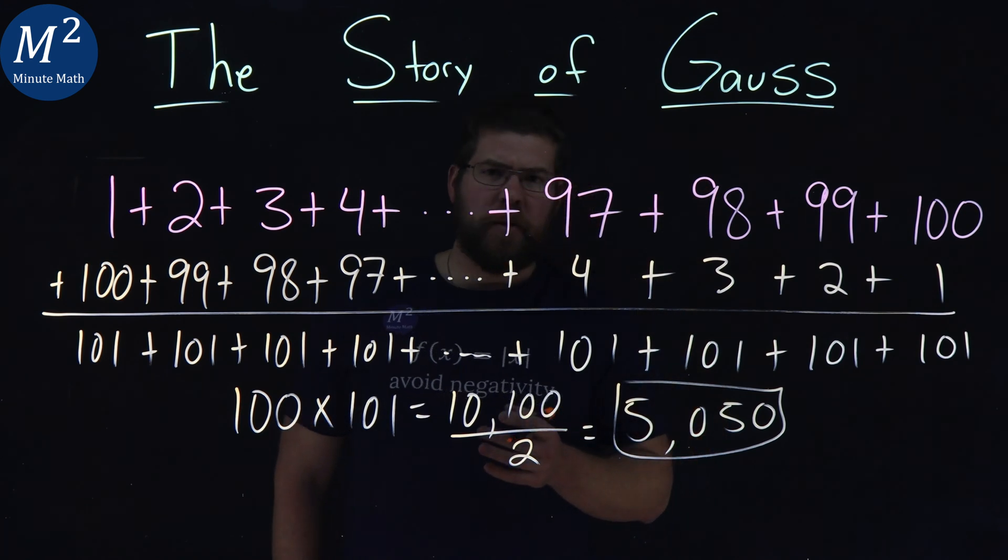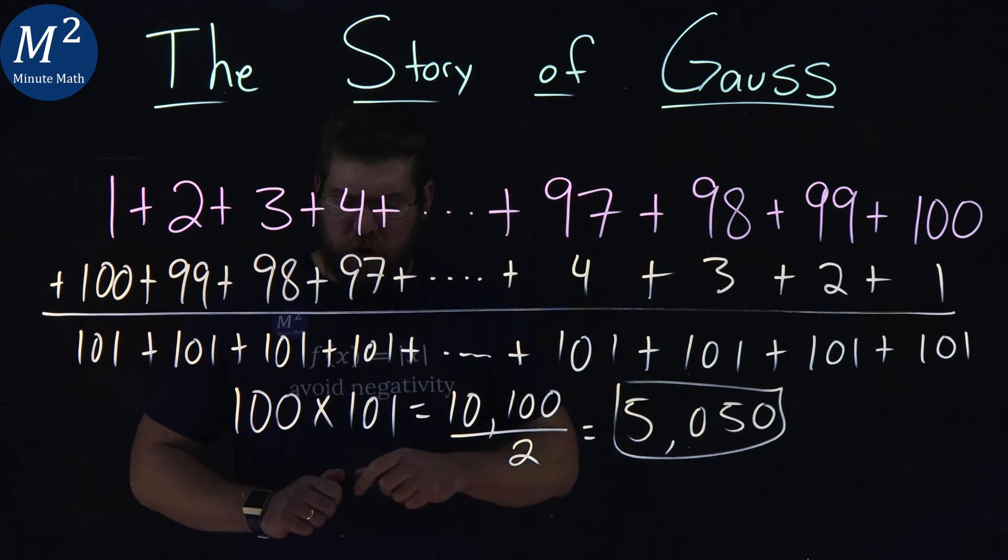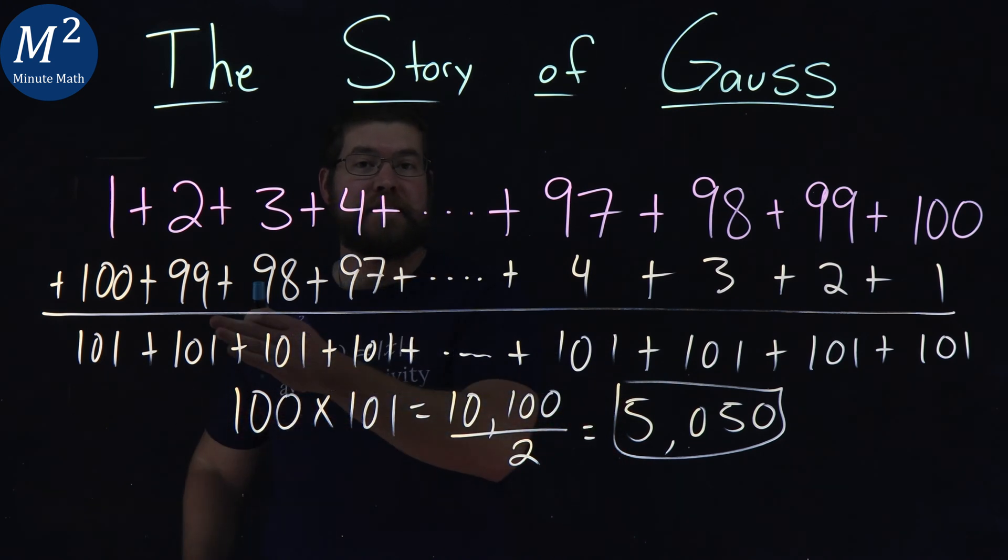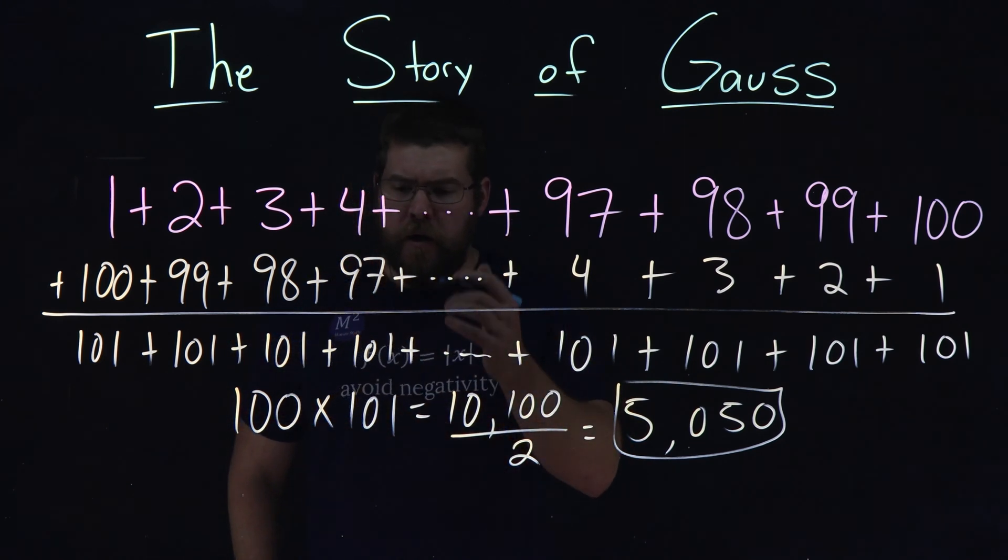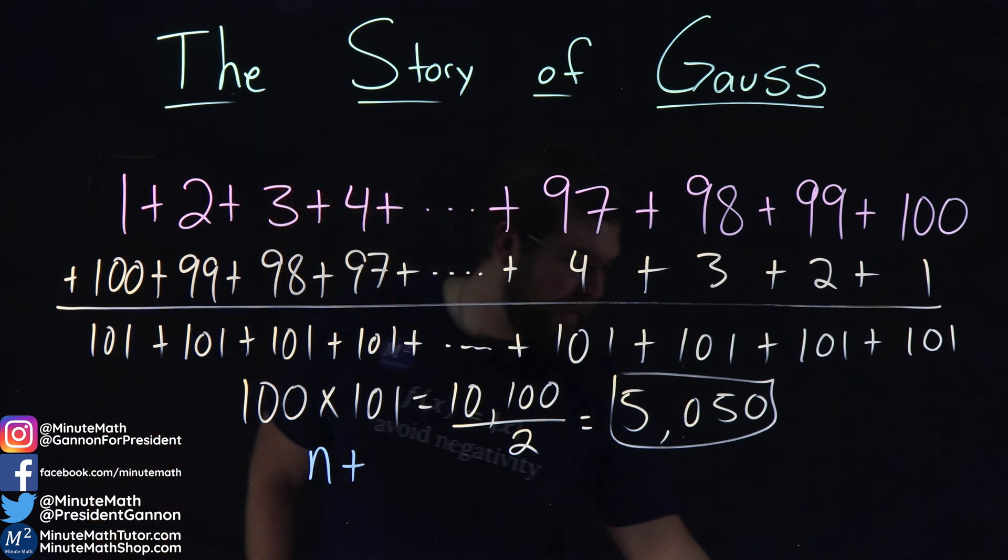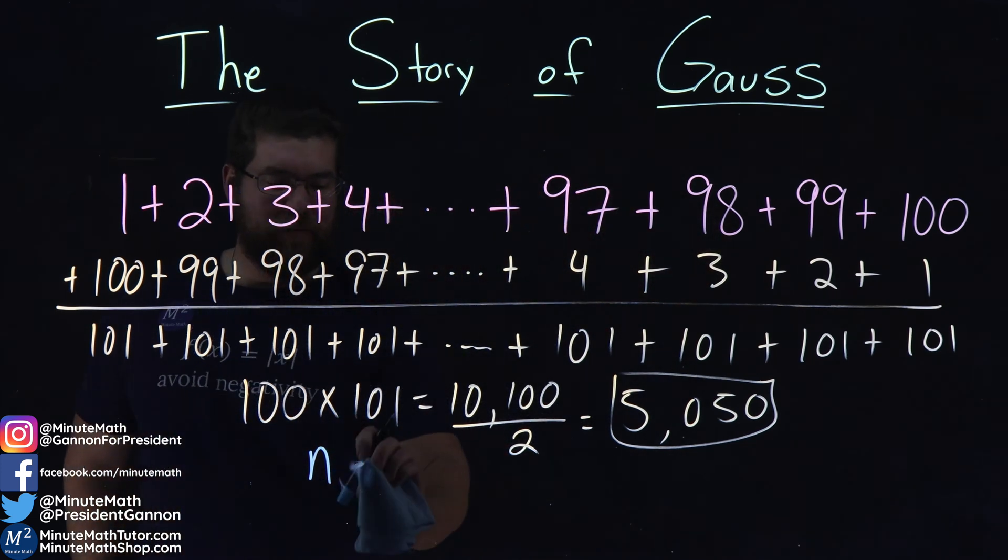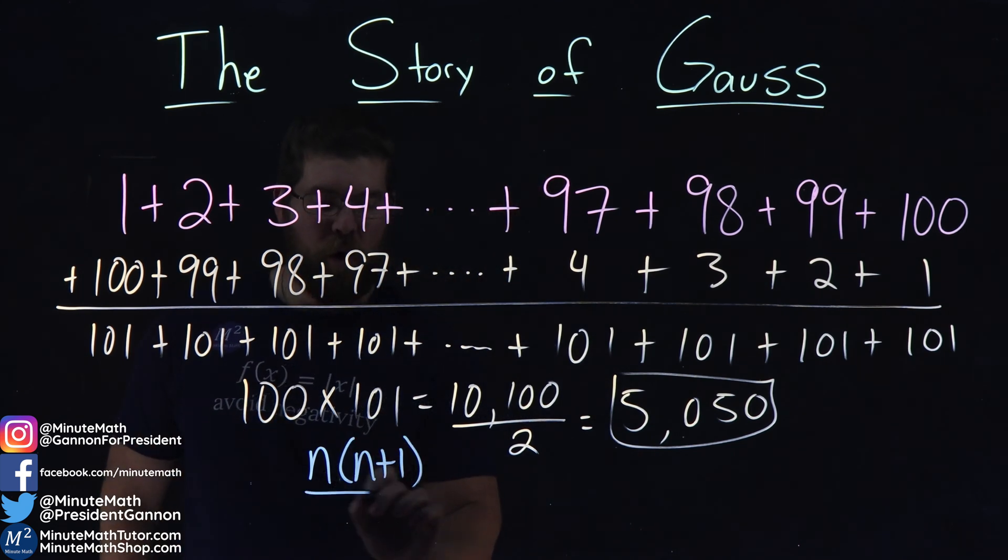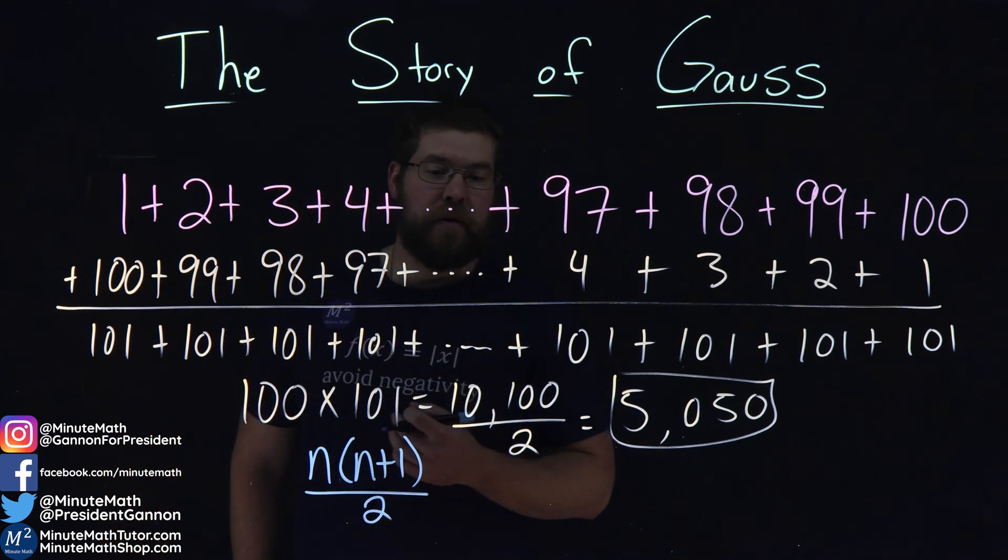Now, this is actually a pretty neat thing. If you know anything about this series here of adding the sum of any consecutive numbers, what we have here is n times n plus 1 over 2, we get the same answer.